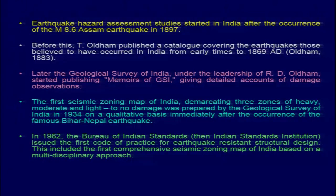In 1962, the Bureau of Indian Standards (BIS), then called the Indian Standard Institution, issued the first building code of practice for earthquake-resistant structure design. This included the first comprehensive seismic zoning map of India based on a multidisciplinary approach. When such maps are prepared, past seismicity, ongoing seismicity, damage patterns, geological structures, and active faults are all taken into consideration, along with ground acceleration data.